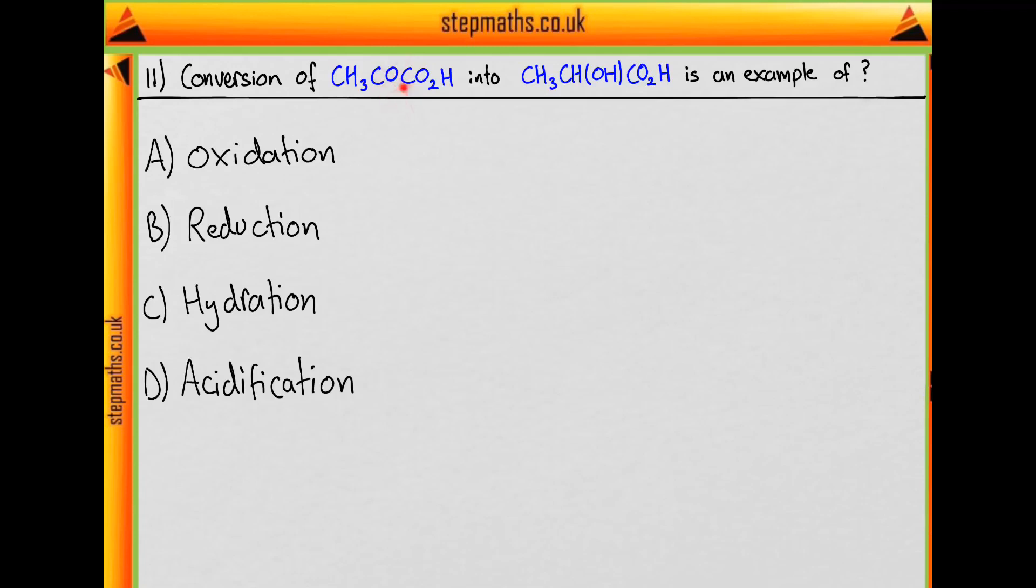So we can see in our pyruvic acid that we have a ketone group, and when it converts into lactic acid, that ketone group is converted to an alcohol.